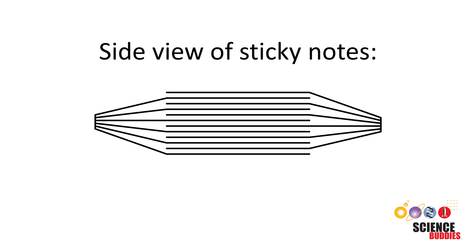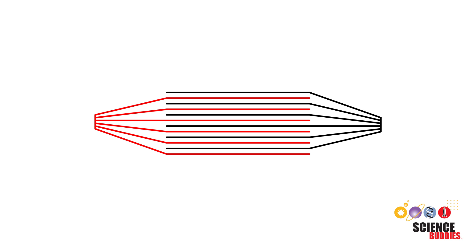To understand what's really going on, we need to look at a diagram of the pages from the side. Here we see two different pads of sticky notes with their pages interleaved, making the middle section thicker. The spaces between the pages are exaggerated to make the diagram easier to see.